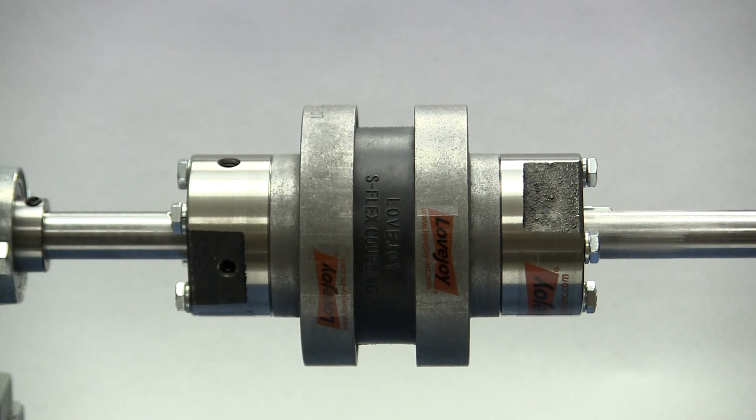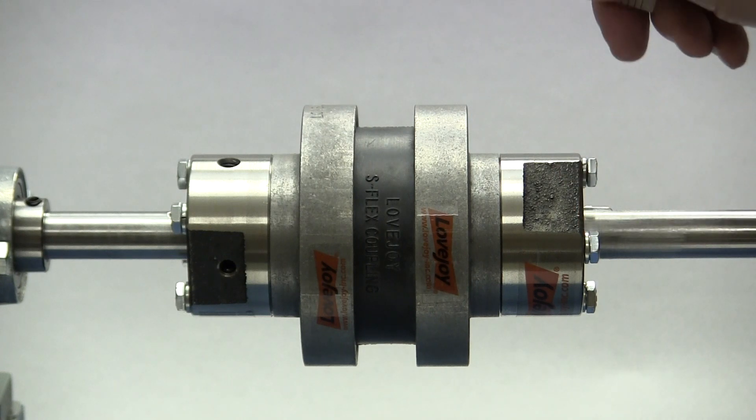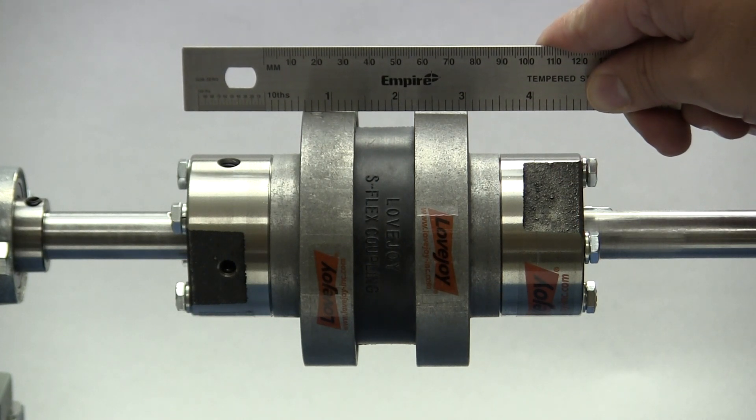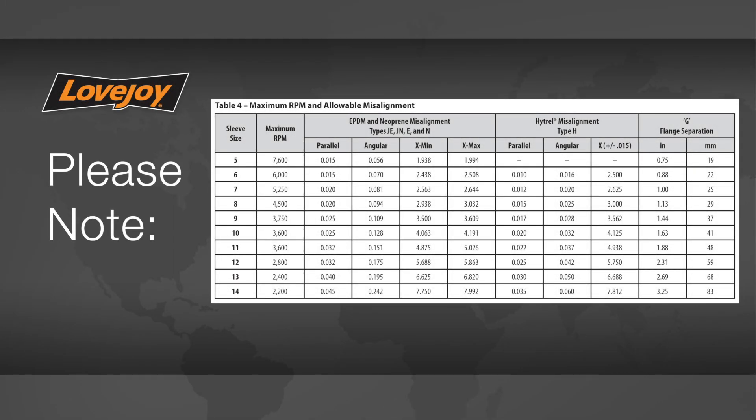To check the basic alignment, start by laying a straight edge across the major diameter of the flanges. The maximum allowable parallel offset should not exceed the amount for your particular coupling size found in the installation guide and shown here.